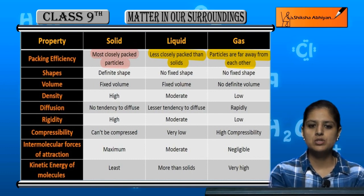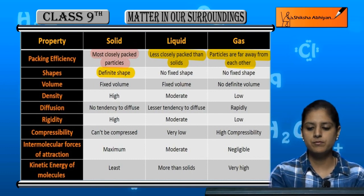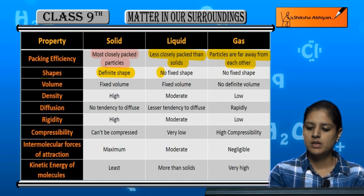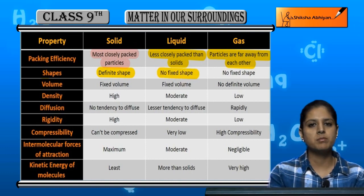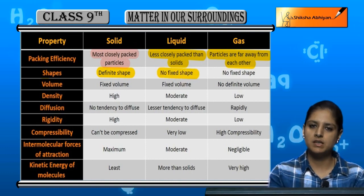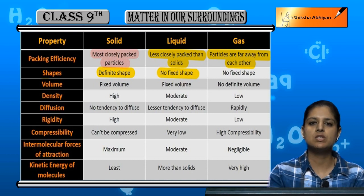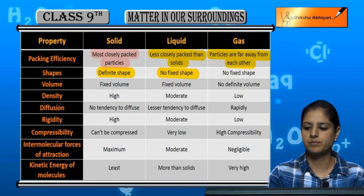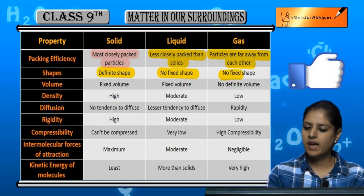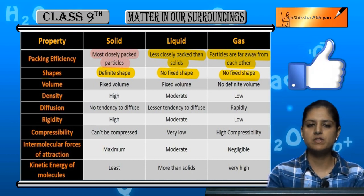Shape: solids have a definite, fixed shape. Liquids have no fixed shape — they take the shape of the container. And gases also have no fixed shape.